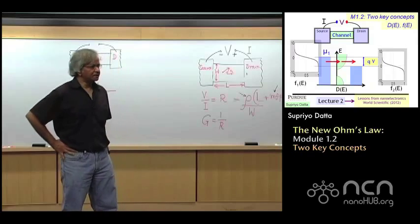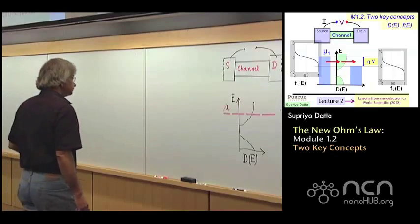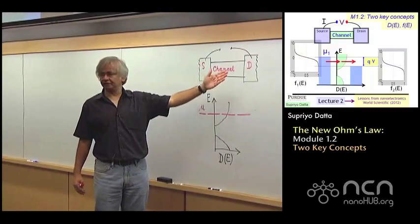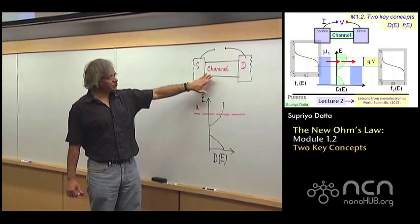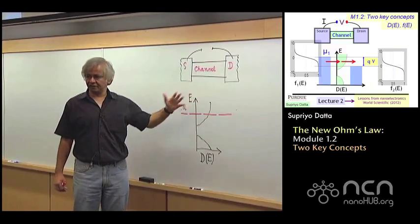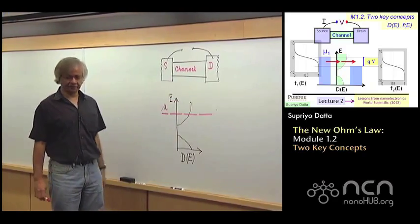And the first concept is this idea of a density of states. And that is that, you see, we are trying to describe the current flow through this channel. And one of the first things you want to know about this channel is this density of states, which is what I have sort of plotted schematically here.